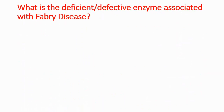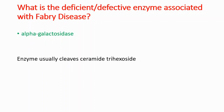What is the deficient or defective enzyme associated with Fabry disease? Alpha-galactosidase A is deficient or defective in these patients. This enzyme normally cleaves ceramide trihexoside, and when it is not cleaving that, you see accumulation.